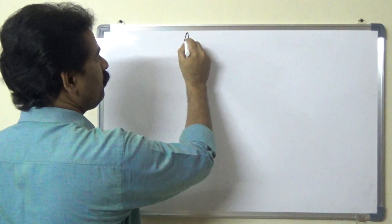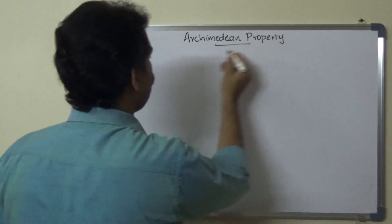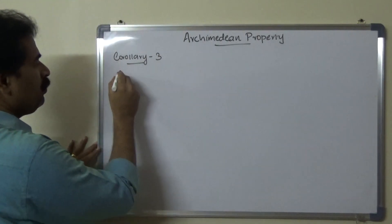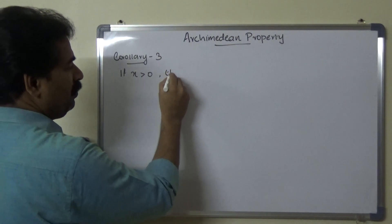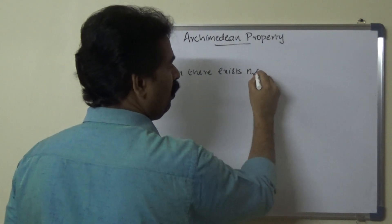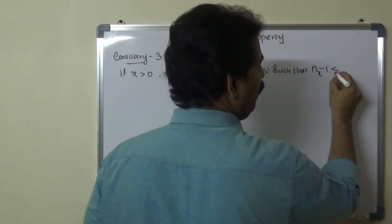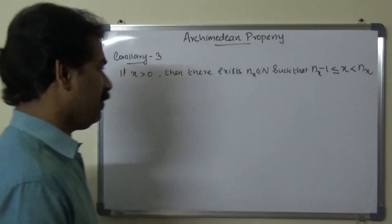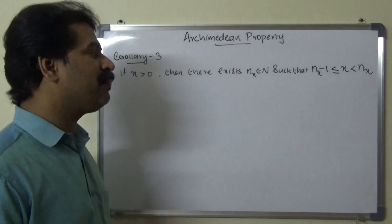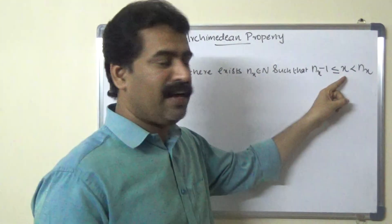Corollary 3. The statement is: if x is a positive real number, then there exists Nx belonging to capital N (the natural numbers) such that Nx minus 1 is less than or equal to x, which is strictly less than Nx.